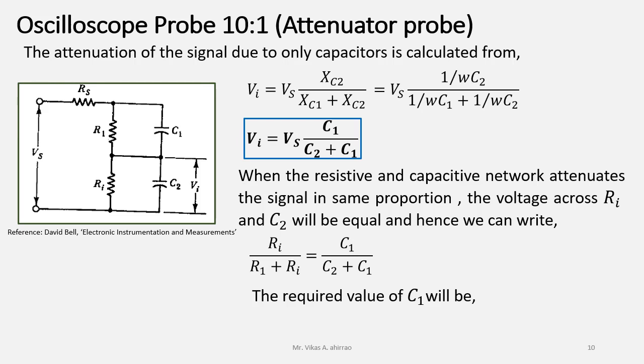Solving for the required value of C1, C1 will be equal to C2 times Ri upon R1. With the same values of R1 and Ri, that is 9 megaohms and 1 megaohm, we will get C1 is equal to C2 upon 9.